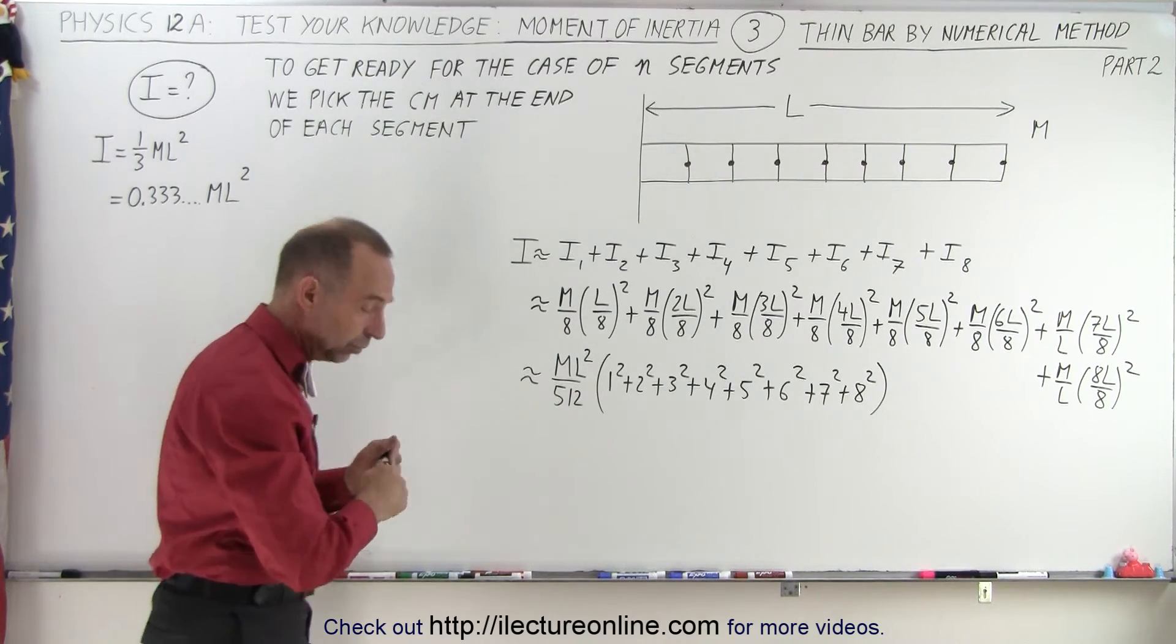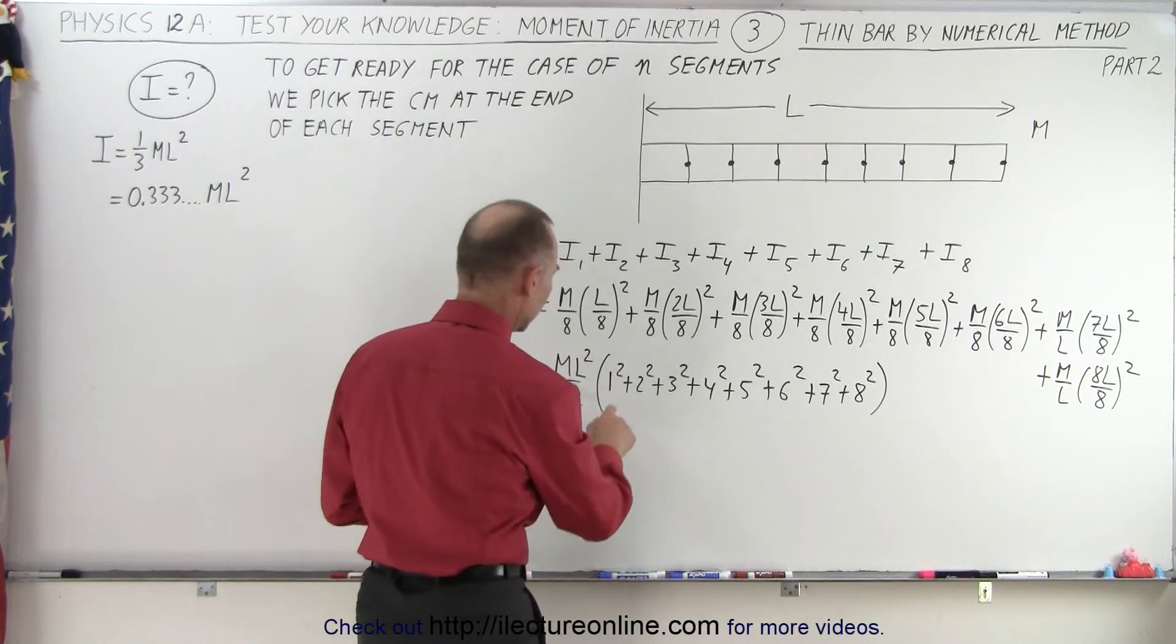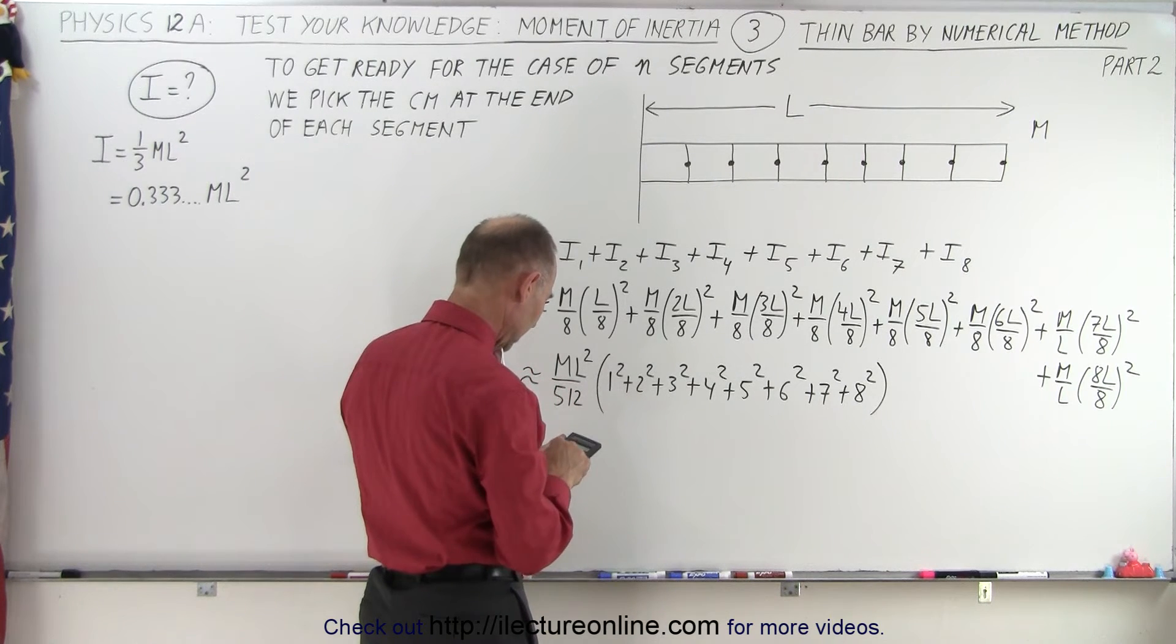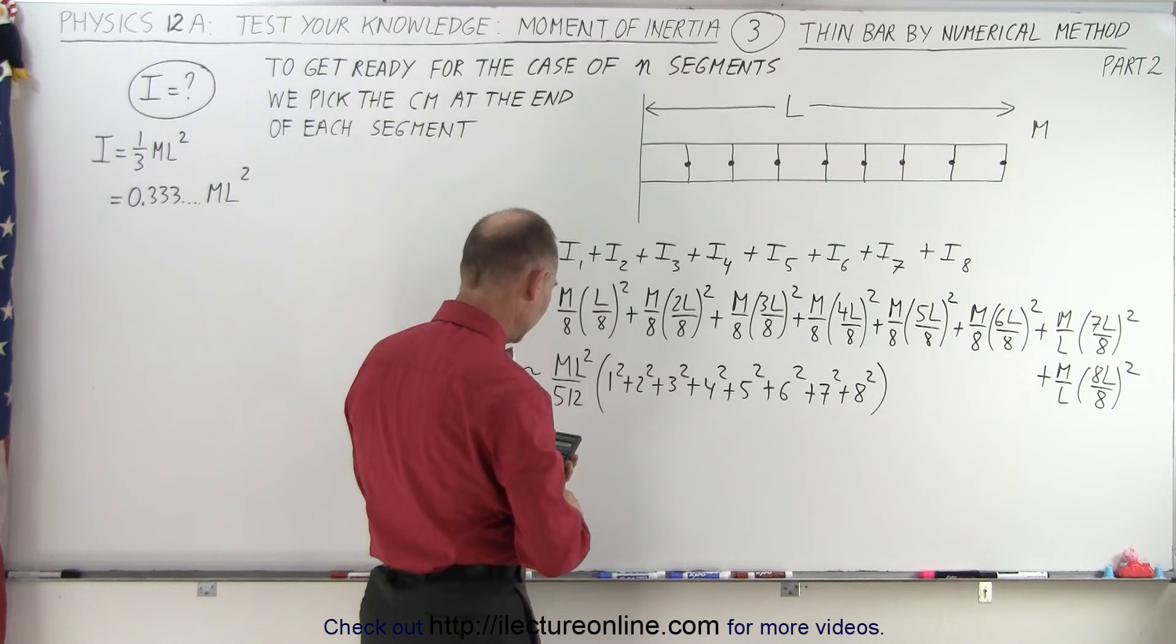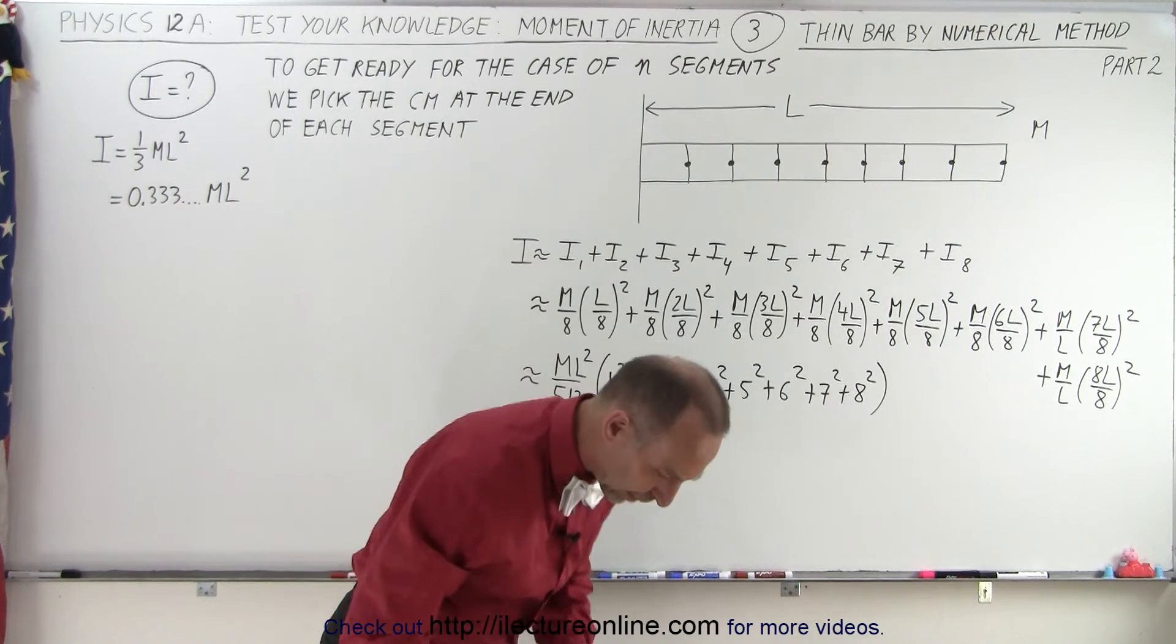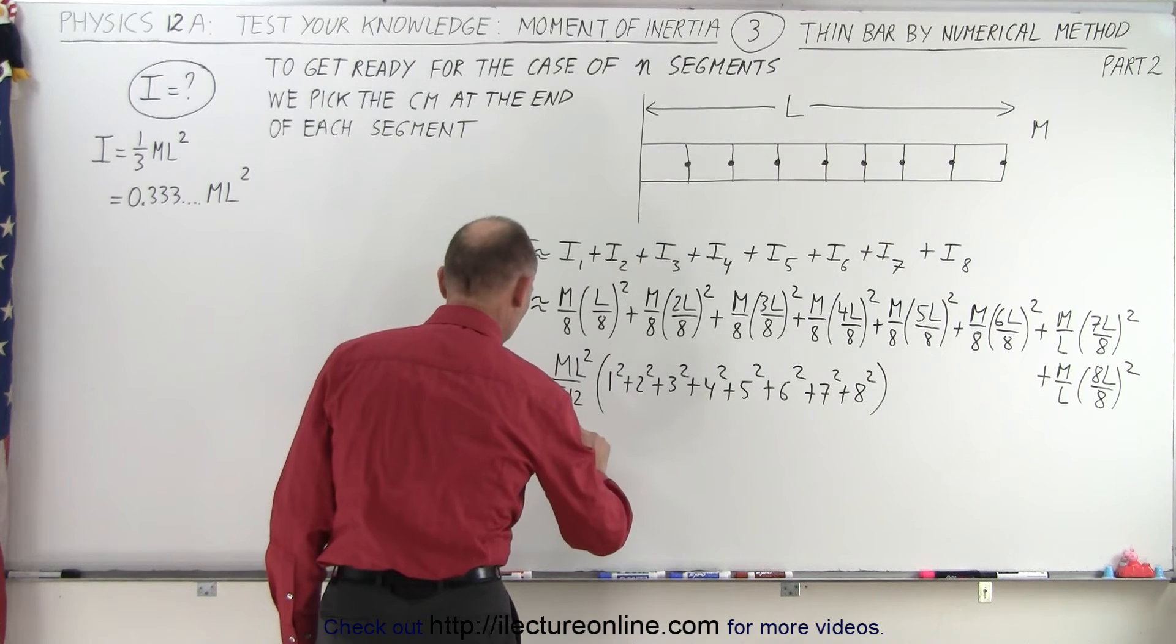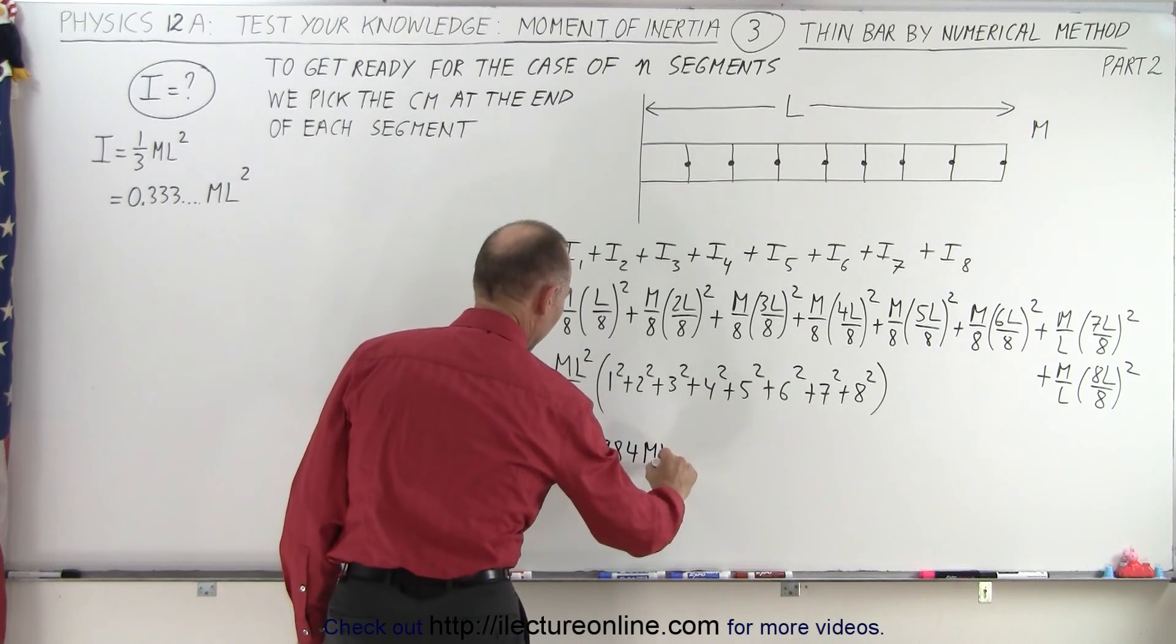And now we have to add up all those, and divide by 512. So that would be 1, that would be, okay, so 1, 1 plus 4 plus 9 plus 16 plus 25 plus 36 plus 49 plus 64 equals—divide that by 512, and notice in this case, 204. So that's approximately equal to 0.3984 ml squared.